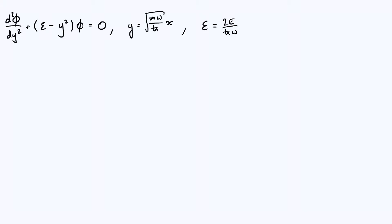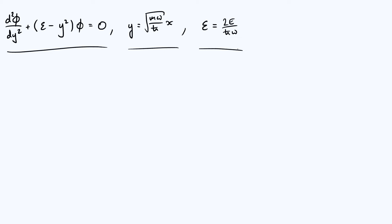Hi everyone. This is the second video in my five-part series on solving the quantum harmonic oscillator. In the previous video we derived this simplified dimensionless form of the Schrödinger equation in the case of a harmonic potential. We did that by rescaling variables, so our position variable x was rescaled to the new variable y and our energy variable E was rescaled to become epsilon, where y and epsilon are dimensionless. Now we're going to start actually solving this to find the wave function phi as a function of y.